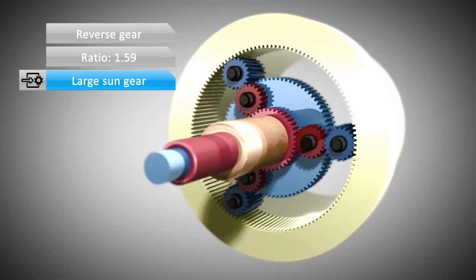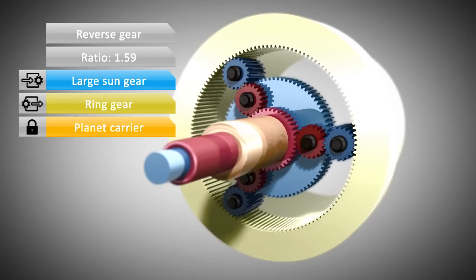In reverse gear, the large sun serves as the input. As in first gear, the planet carrier is held stationary by a braking unit. The ring gear is the output.